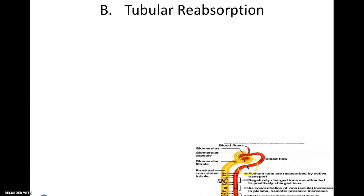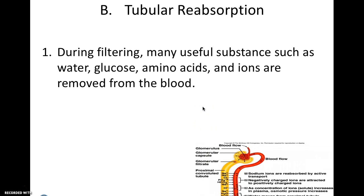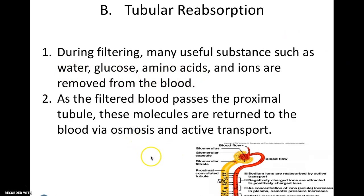Now that things have been absorbed — urea, uric acids, certain ions, anything small enough to enter the nephron is out of the blood — unfortunately, it's too much. Something needs to be reabsorbed back into the bloodstream so you still have all the nutrients needed. During filtration, useful substances such as water, glucose, amino acids, and ions are removed from the blood. As the filtered fluid passes the proximal tubule, these molecules are returned by osmosis (for water) and active transport.